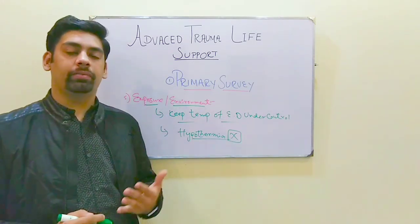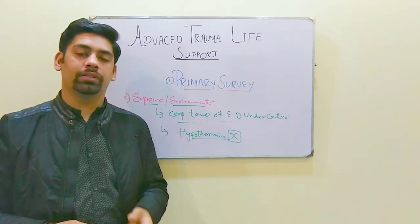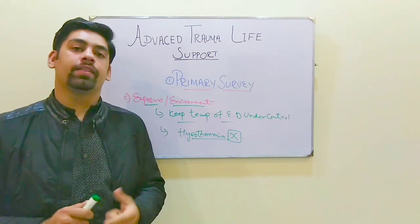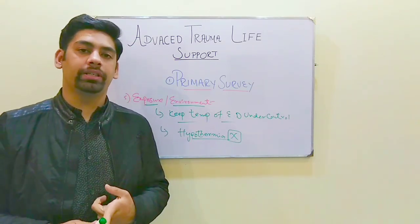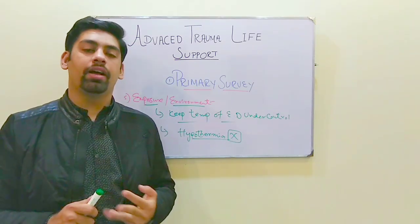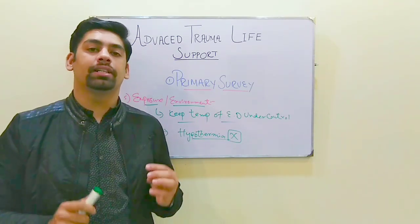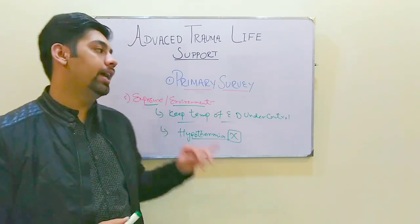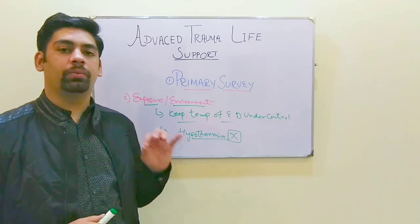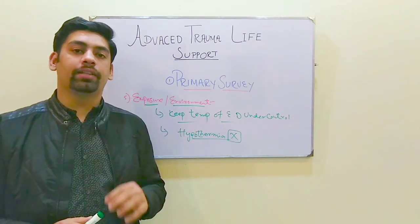These were the five main components of the primary survey: the first was airway and the cervical spine, the second was breathing, the third was circulation, the fourth was deformity and the neurological examination, and the fifth was environmental control and exposure.